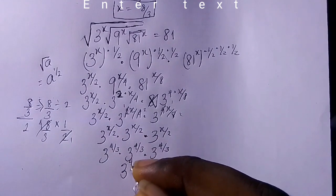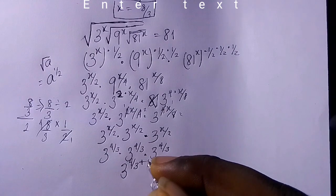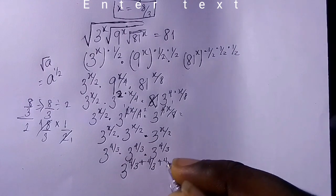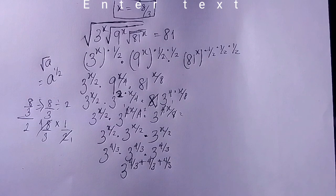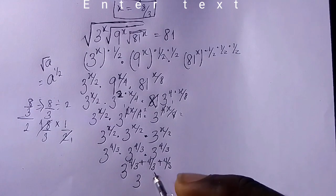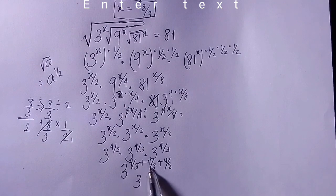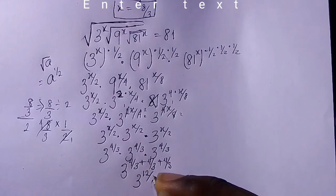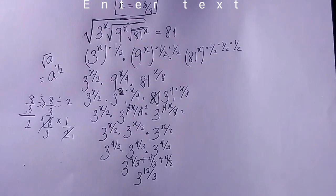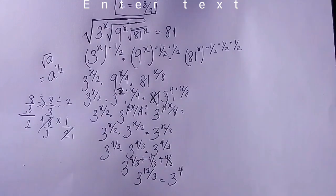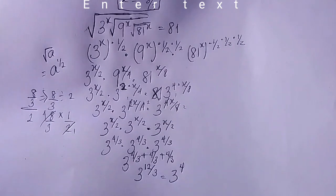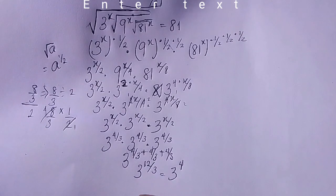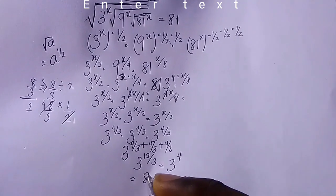Using the law a^m × a^n = a^(m+n), we have 3 raised to the power of 4/3 + 4/3 + 4/3. Since the denominators are the same, we add: 4+4+4 = 12, giving 3 raised to the power of 12/3, which is 3 raised to the power of 4. And 3 raised to the power of 4 equals 81, which confirms our answer is correct.